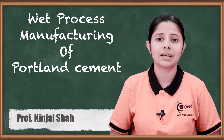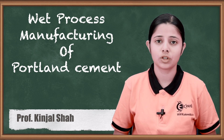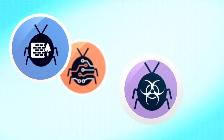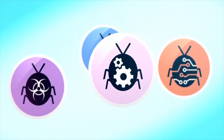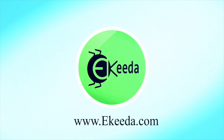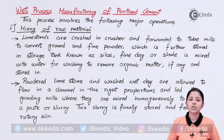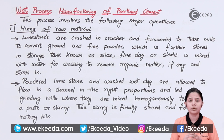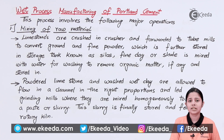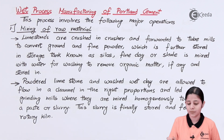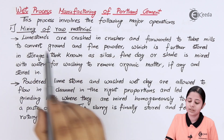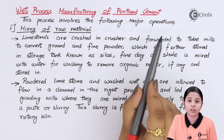In today's session we are going to study the entire manufacturing process of Portland cement. This wet process manufacturing of Portland cement has different parts — it is carried out in different phases and steps. Let us see all the different steps one by one. The wet process manufacturing of Portland cement involves the following major operations.